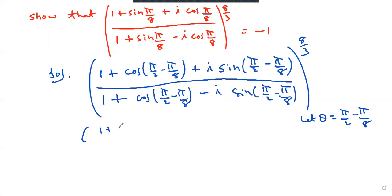1 plus cos θ plus i sin θ over 1 plus cos θ minus i sin θ. Question number 3.